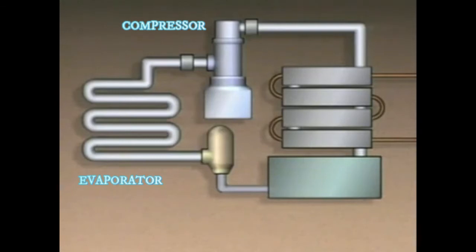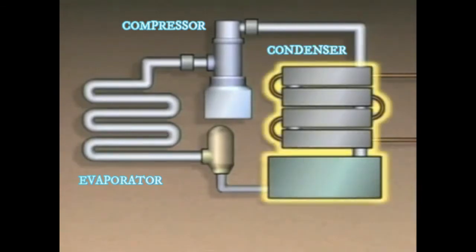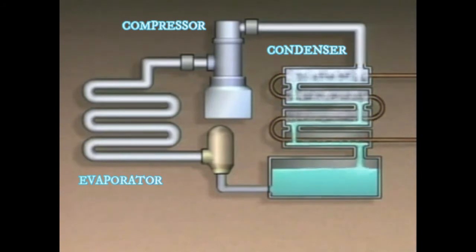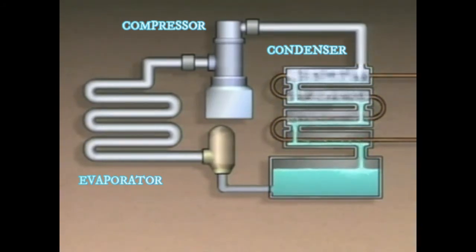The component in which the heat is rejected from the cycle is the condenser. In the condenser, the refrigerant vapor is condensed back into a liquid. As the refrigerant flows through the condenser, it gives off heat.